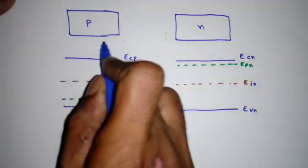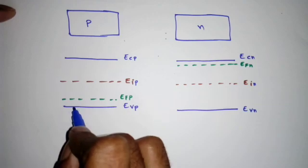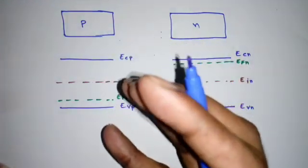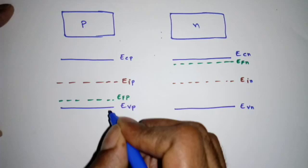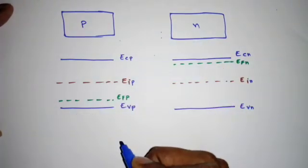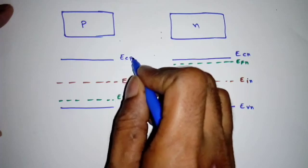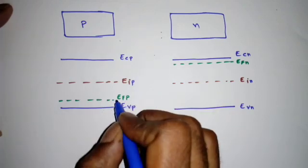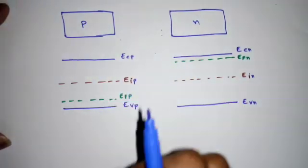For a p-type semiconductor, the majority carriers are holes, so the Fermi level Efp moves closer to the valence band Evp. We label the bottom of the conduction band as Ecp and the intrinsic Fermi level as Eip. The Fermi level being near the valence band indicates a higher concentration of holes in the p-type semiconductor.